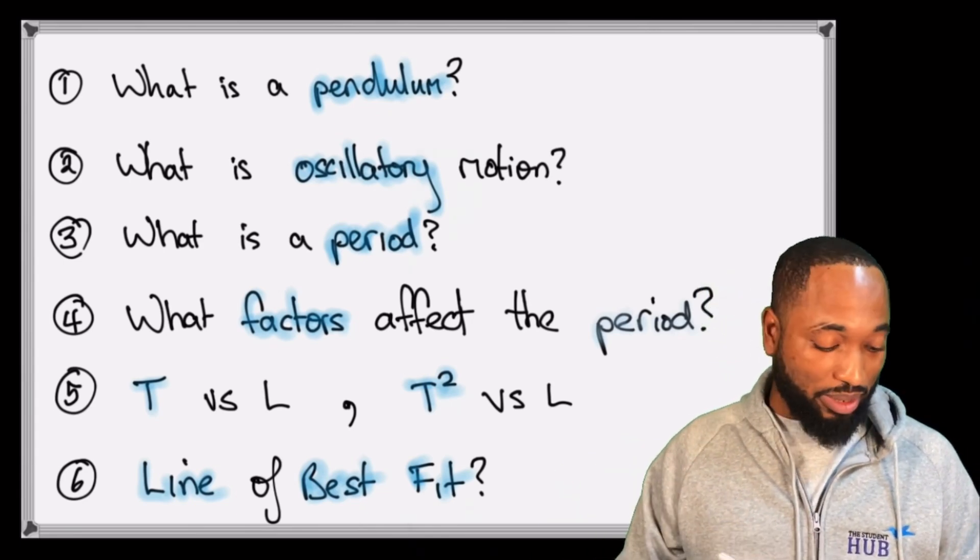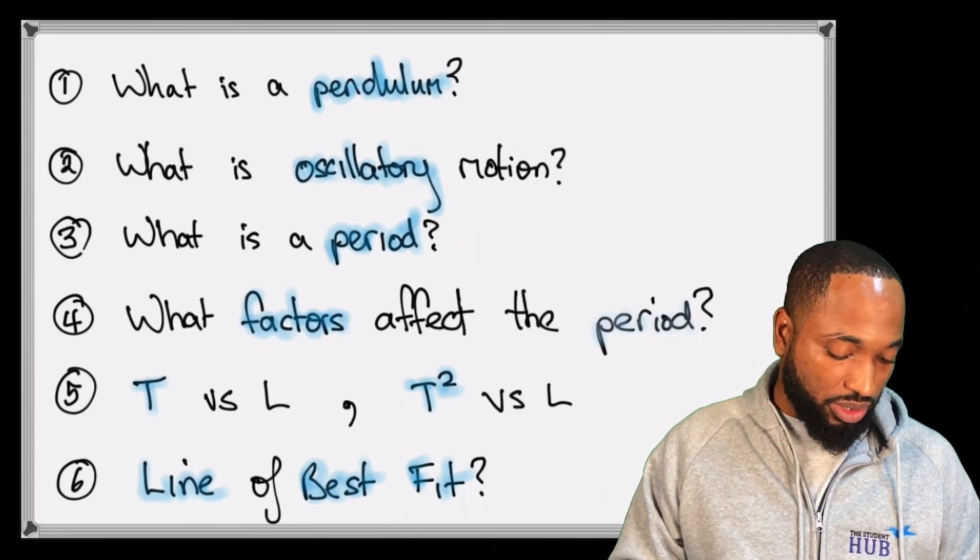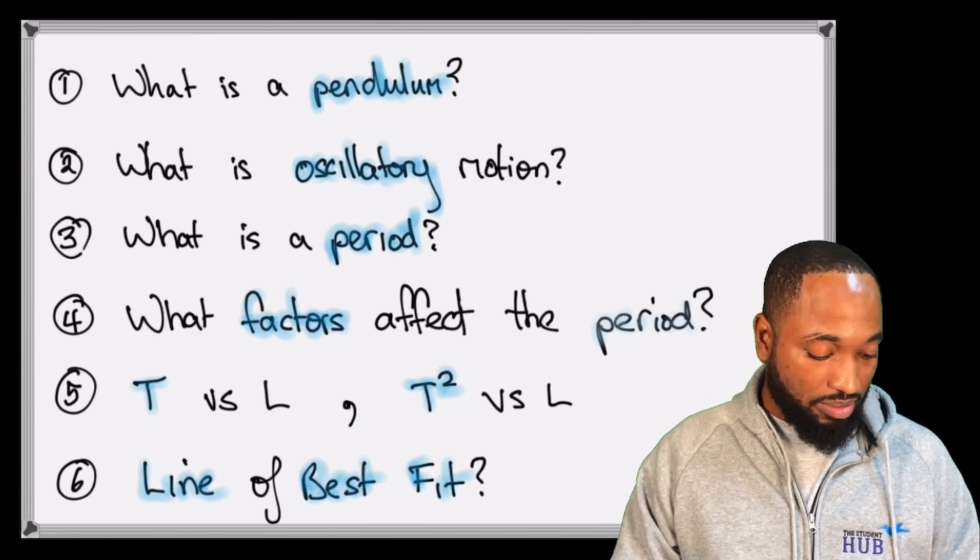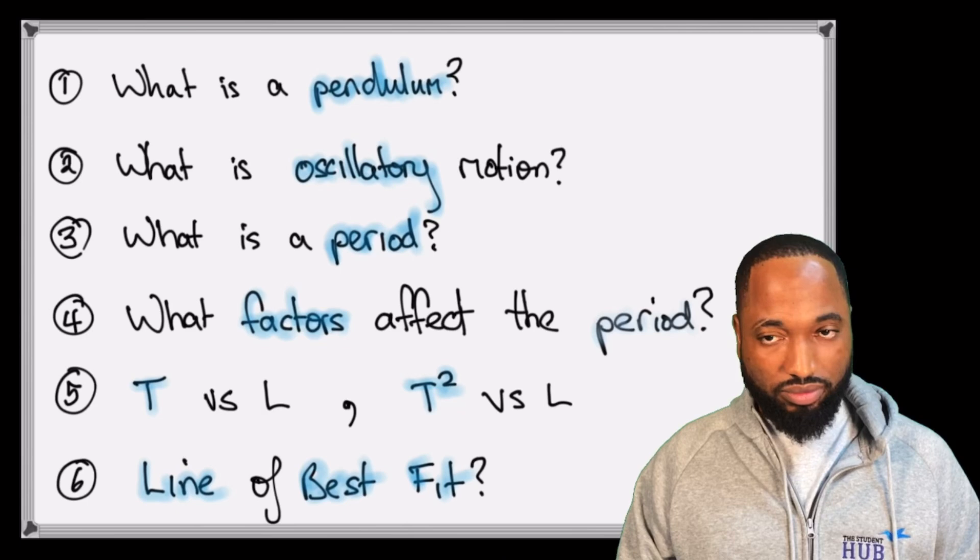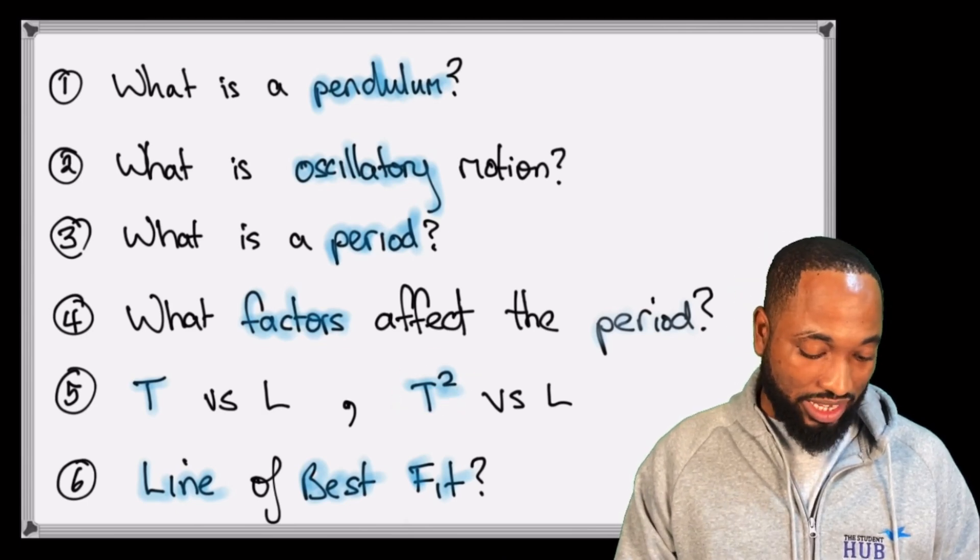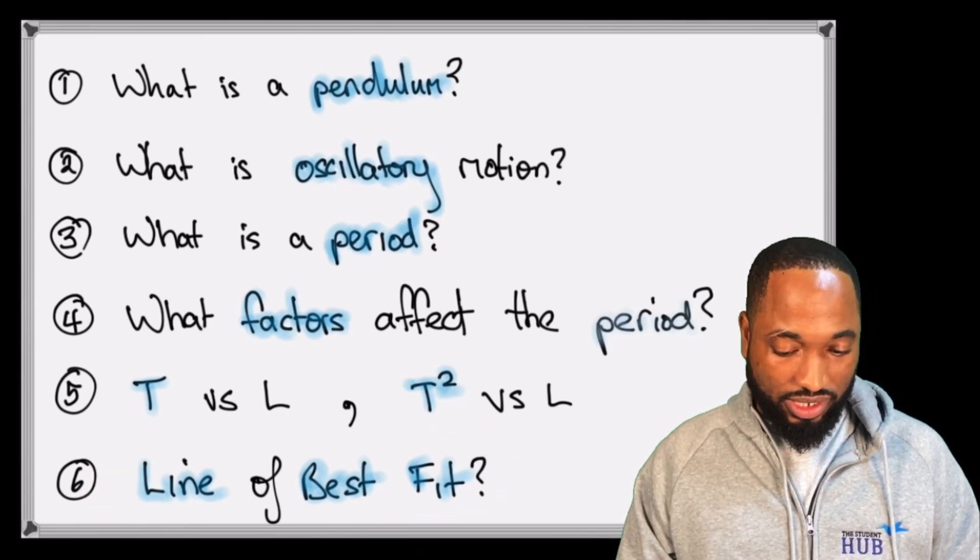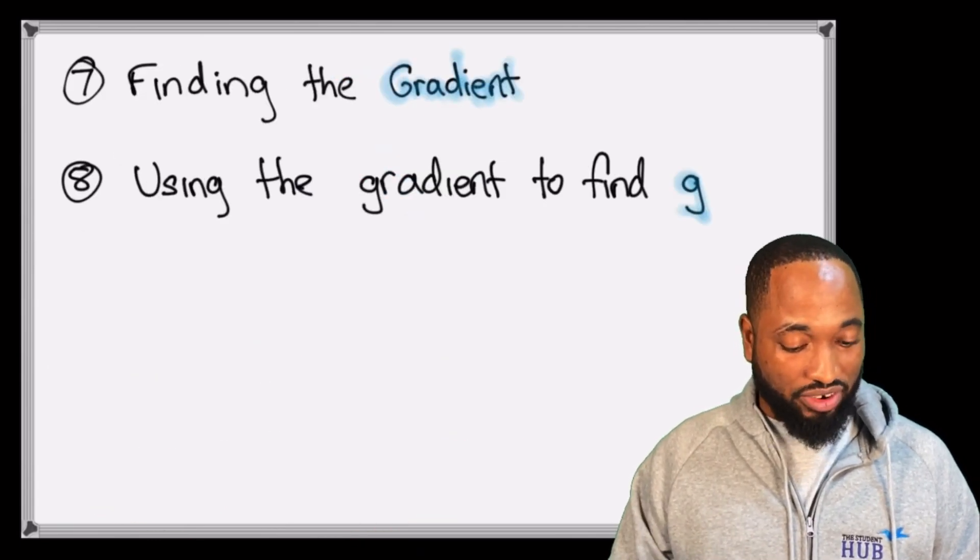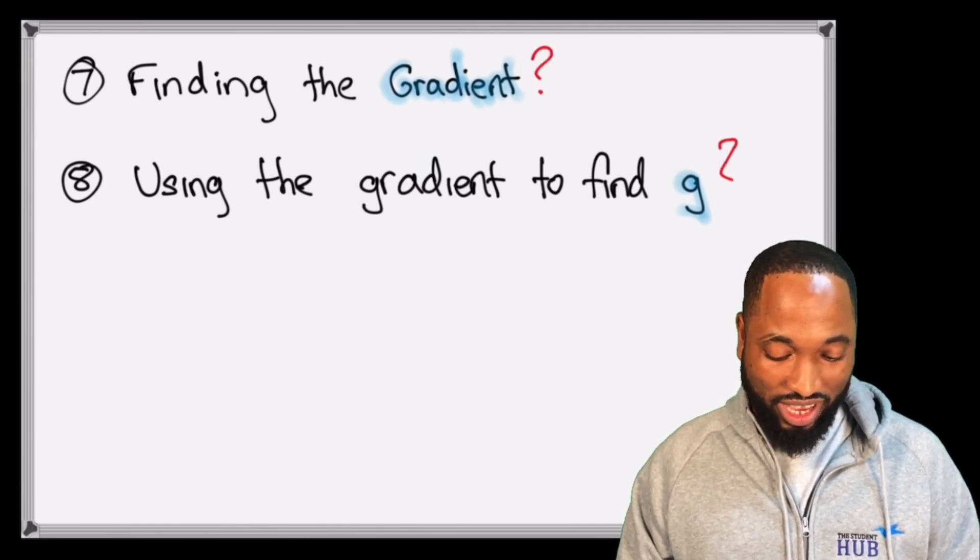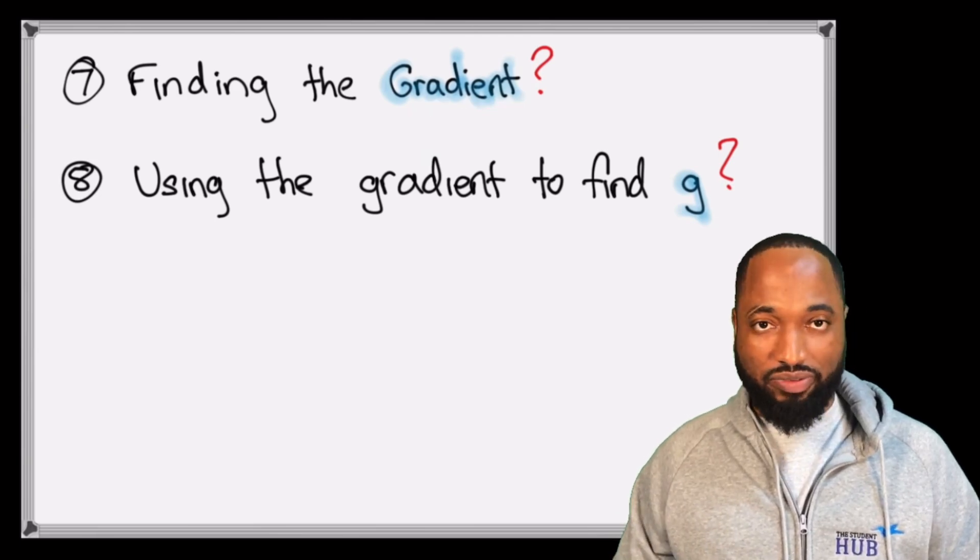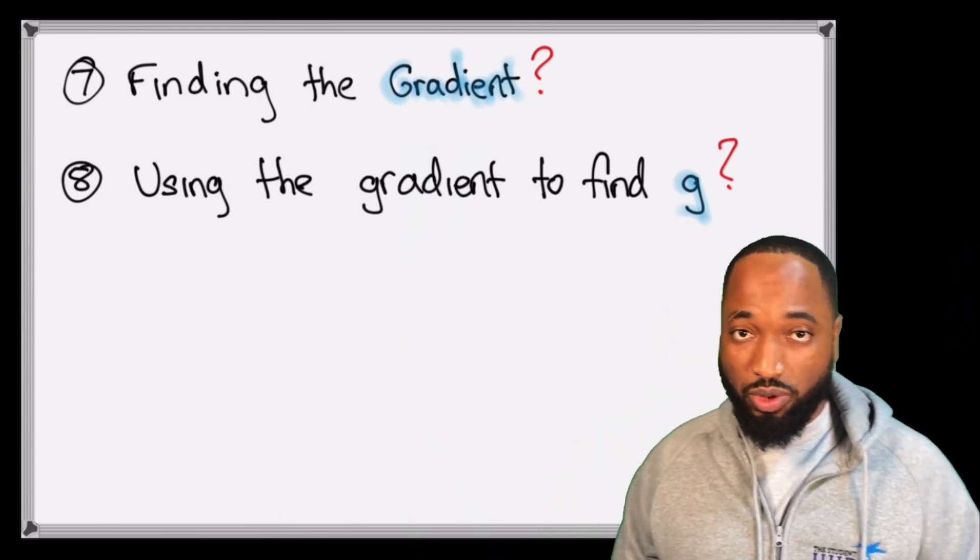What factors affect this period in a simple pendulum? We'll be looking at graphs: T versus L (by the way, T is for period), and T squared versus L. There's a key difference between these two graphs. We'll talk a little bit about this line of best fit and finding the gradient. Can you use the gradient in these graphs to find g? If you know the answer to these eight questions already, this video will just be revision for you. If you don't, let's dive in.